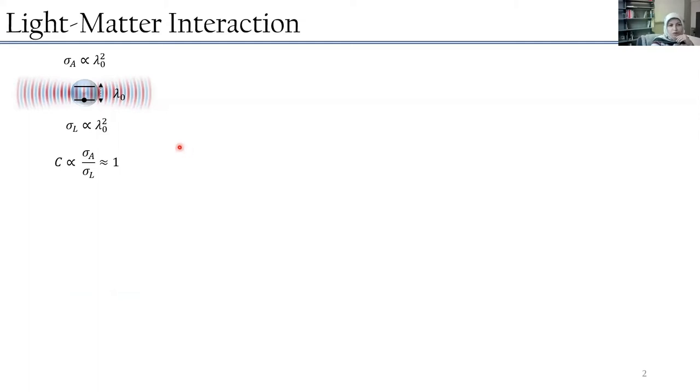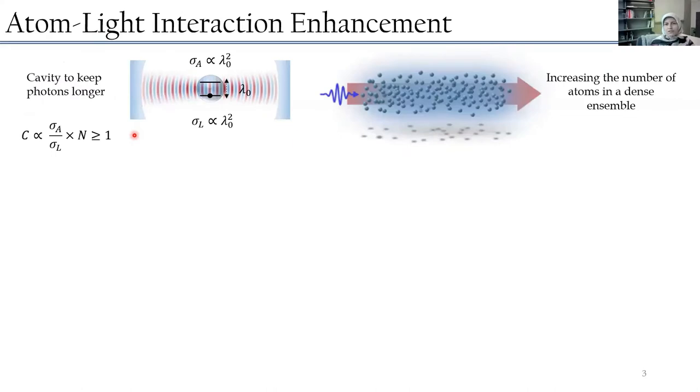The question that we were asking ourselves is if we can really improve it. The answer is of course we can. We can basically think about two approaches. One was using cavities, which basically is the paradigm of cavity QED. The idea is simple: if I have a high finesse cavity, drop the photon and make it interact with the atom over and over, so I can increase the efficiency of the coupling by the number of round trips. The other option is basically increasing the number of atoms when light passes through, and that pushes us to the limit of the dense ensemble.